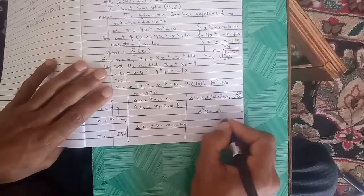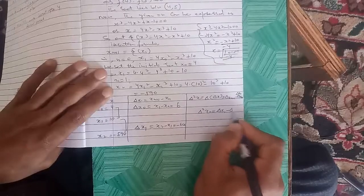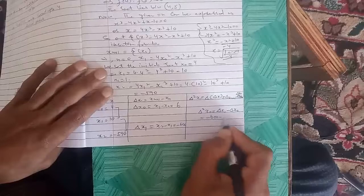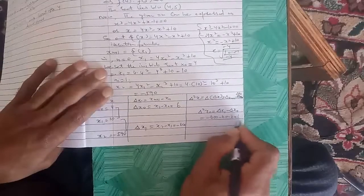Then Δ²x₀ equals Δx₁ - Δx₀, which equals -600 - 6, which equals -606.